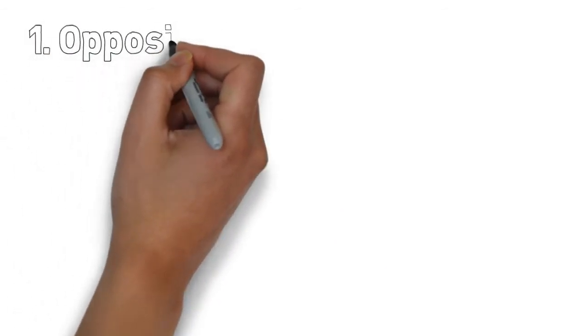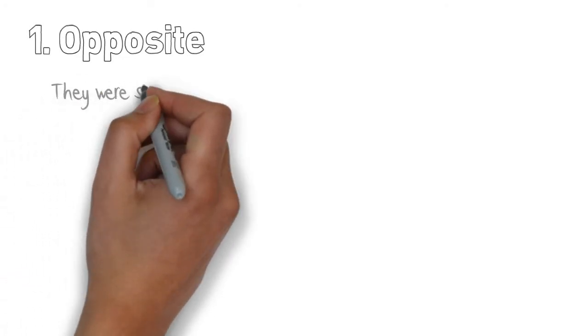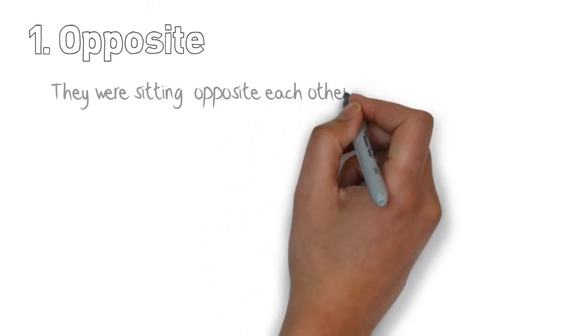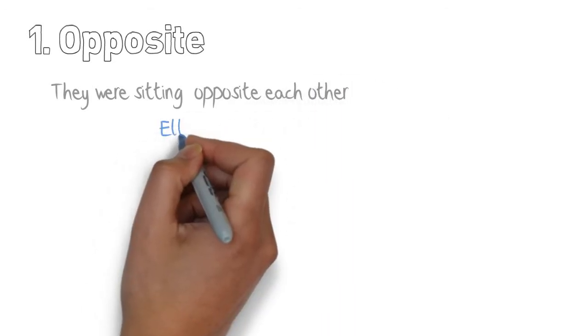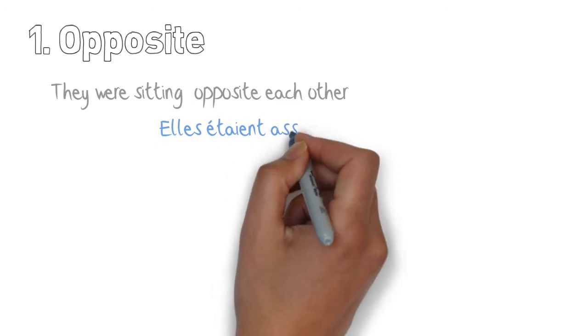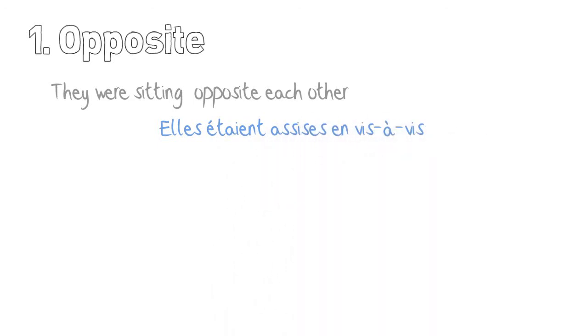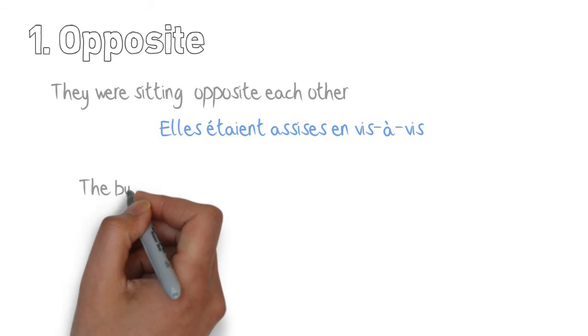First, the main meaning is opposite, face-to-face. They were sitting opposite each other. We can say that we are speaking about girls and say elles étaient assises en vis-à-vis. Here we could also say elles étaient assises face-à-face, en vis-à-vis.